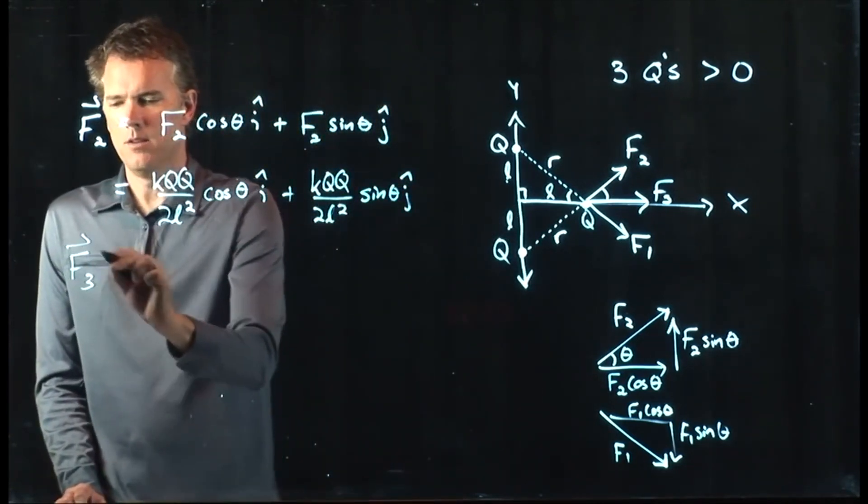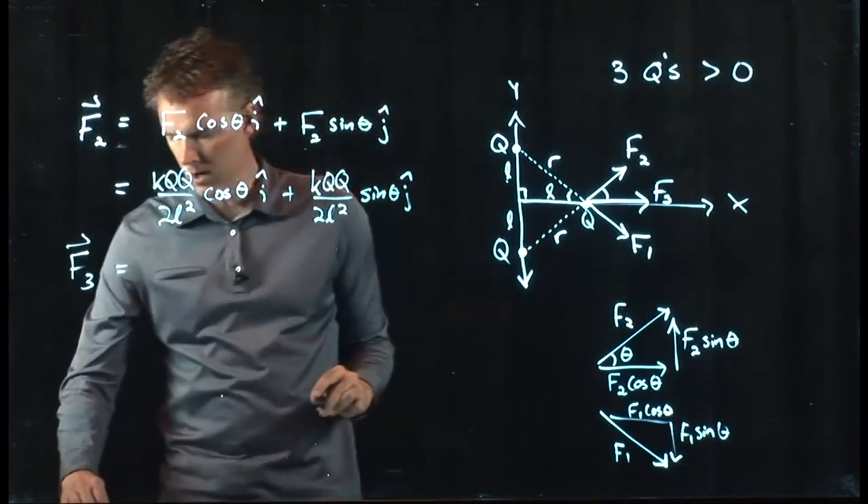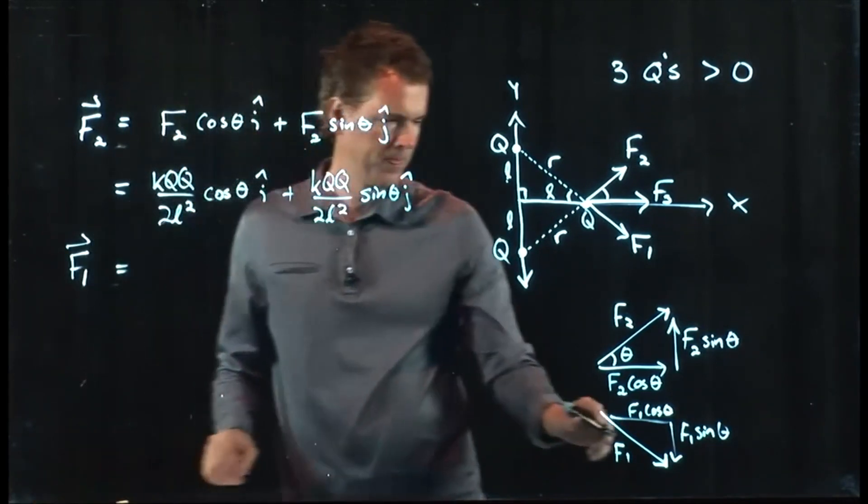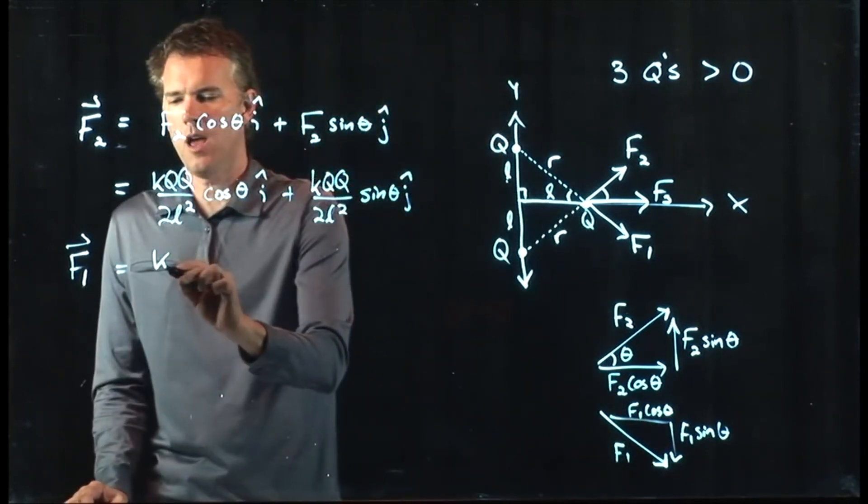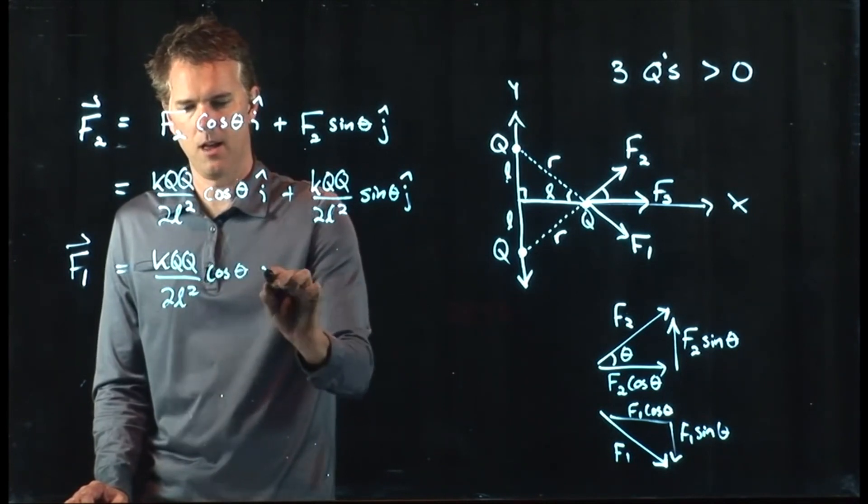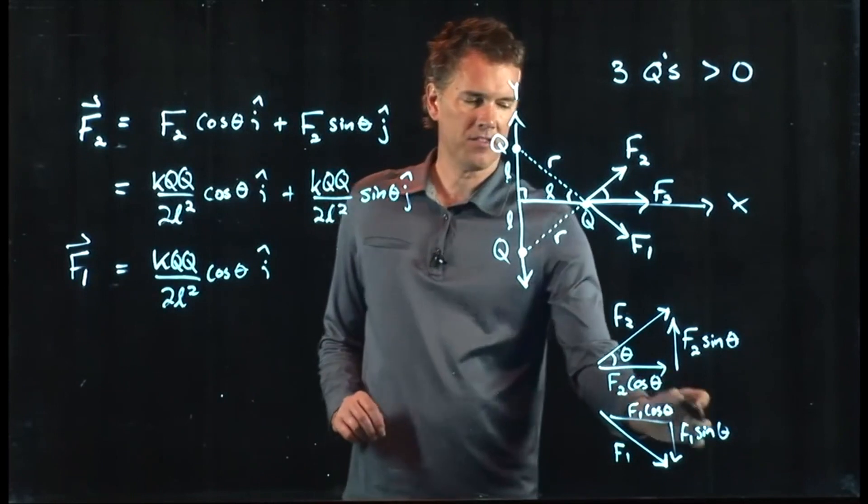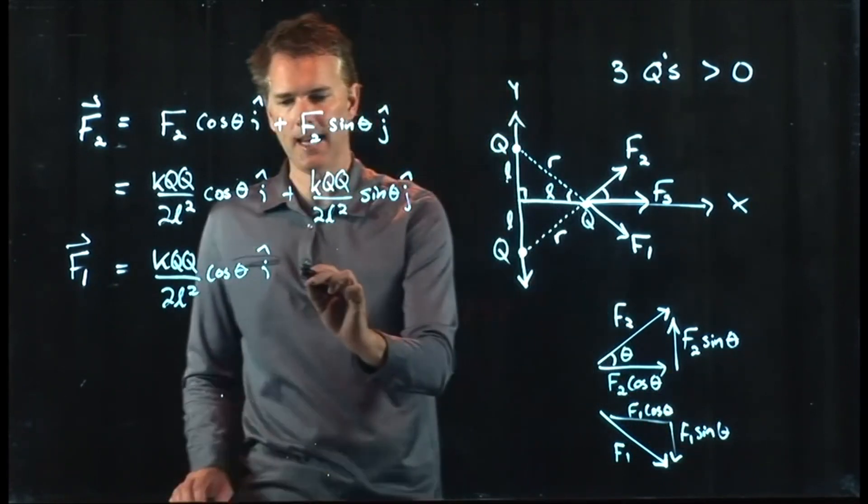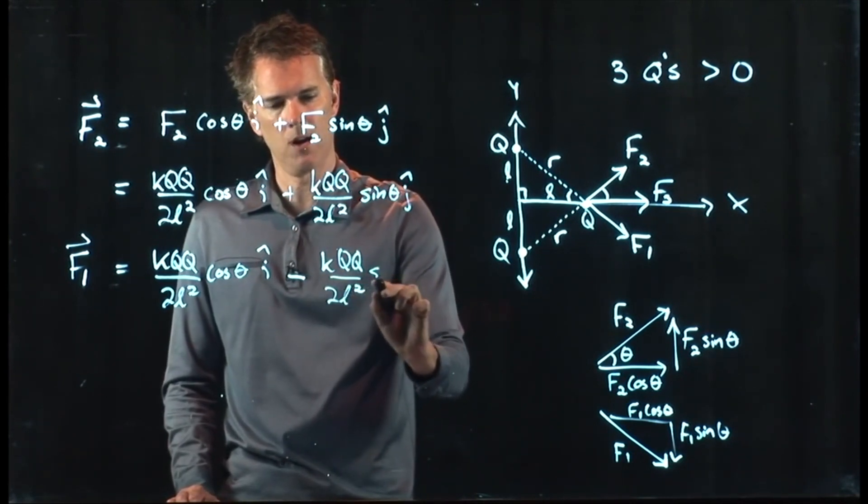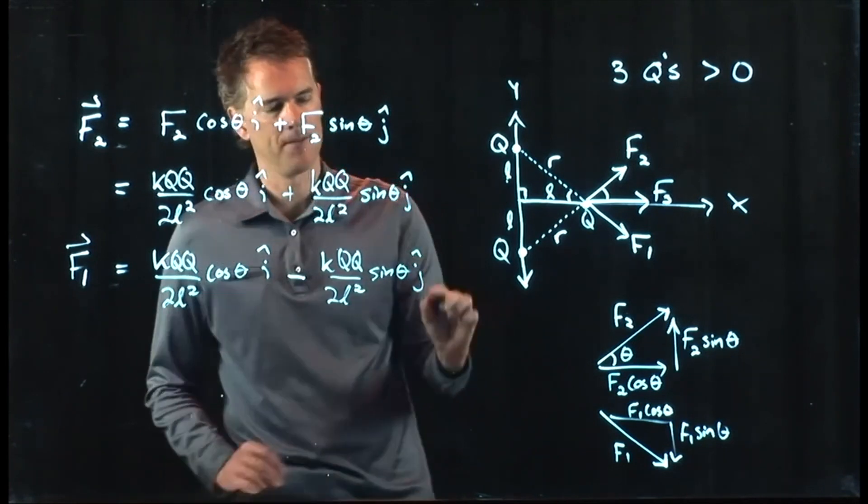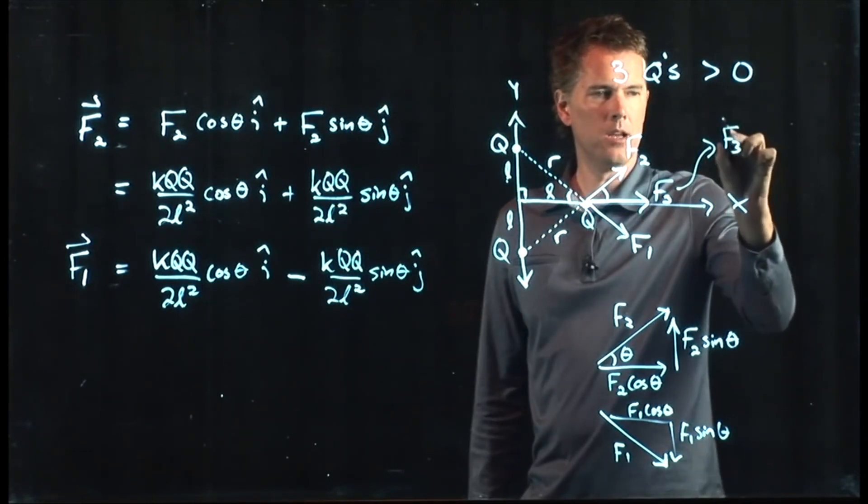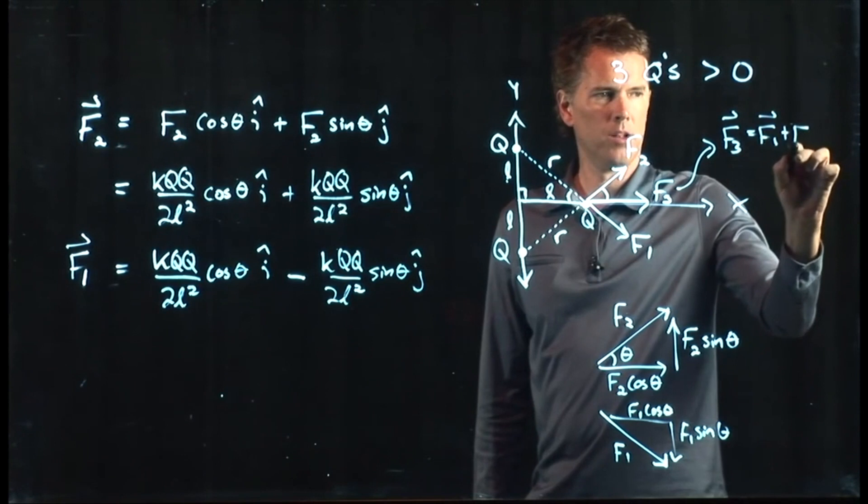F1, which we said is pointing down at an angle. That's going to be KQQ over 2L squared cosine theta I hat. And then we have a sine on the other one, but it's pointing down. And so we need a minus sine. Minus KQQ over 2L squared sine theta J hat. And now what we're looking for is F3. F3 is equal to F1 plus F2.